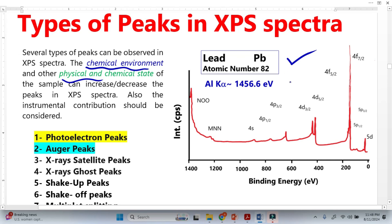For example, this is the standard XPS spectra from lead. We know lead is a heavy element, so we can observe a large number of peaks.